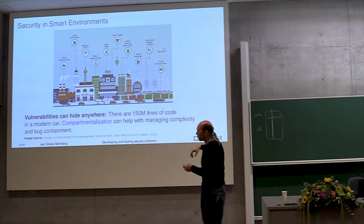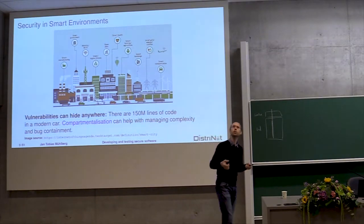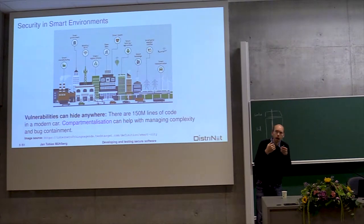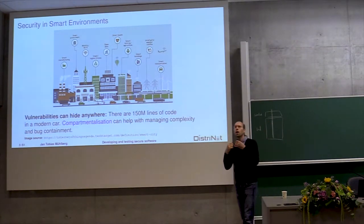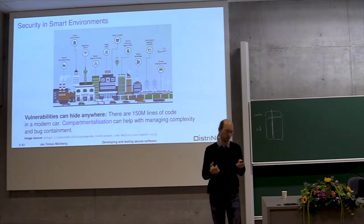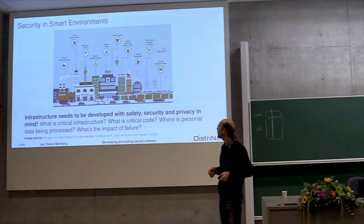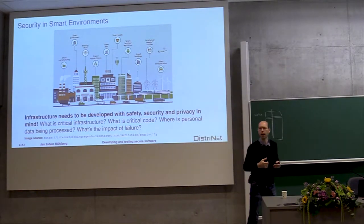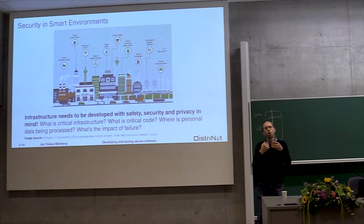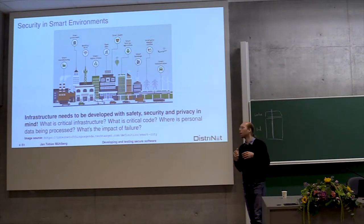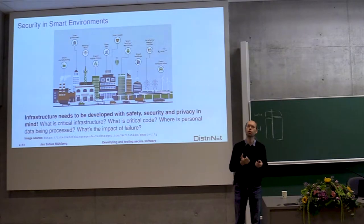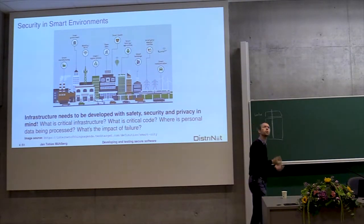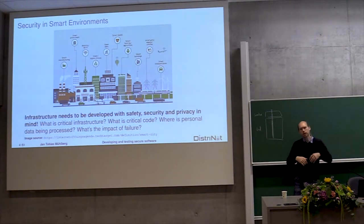If you think of a smart city, that's basically a big safety-critical system where a software bug can lead to severe privacy issues, and can even kill people if you go that far. So if you want to build these kind of systems, we have to make an effort to understand them very well — who the actors are, how they are meant to behave, which parts are critical, where personal data is being processed, how we can secure that. It's a huge effort.